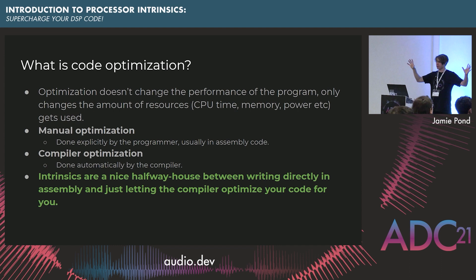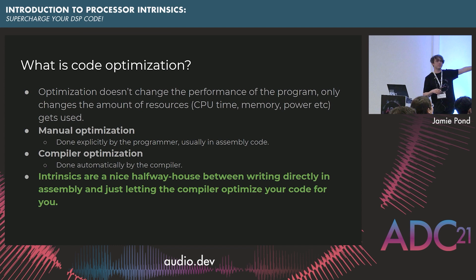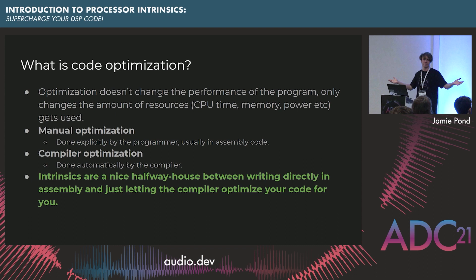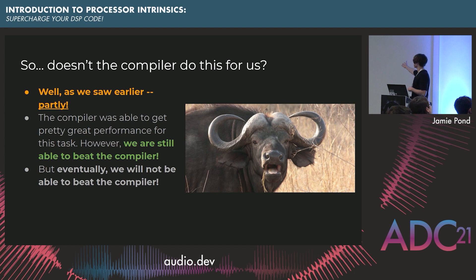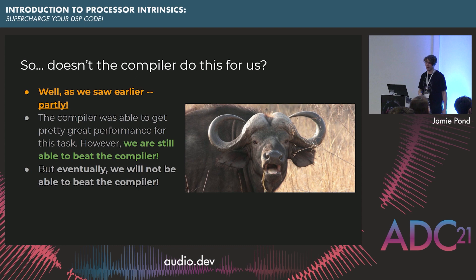Briefly, what is code optimization? We've got two options: we can manually code optimizations — historically that's been done with assembly — or we can let the compiler do it in release mode. These days everyone says the compiler is pretty smart, just let the compiler do its thing. What we have with intrinsics is like a nice halfway house between being able to hand optimize code, but also keep it in C++ and keep it reasonably portable. As you saw earlier, the compiler helps, but there are still some CPU cycles up for grabs if we're willing to put in the effort, and it's not as hard as you might initially think.